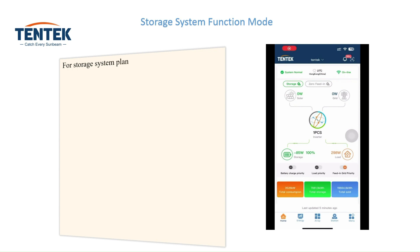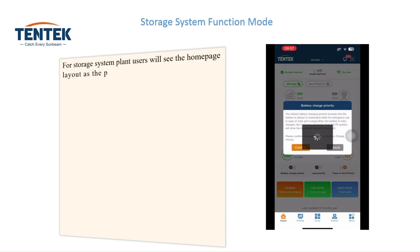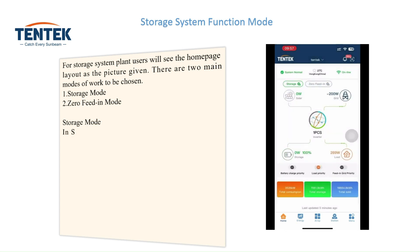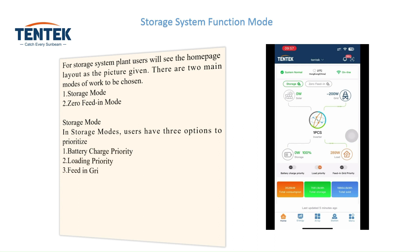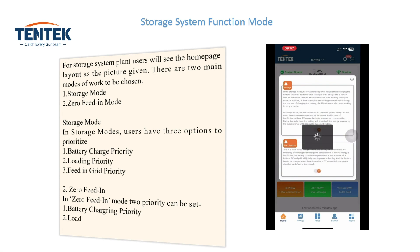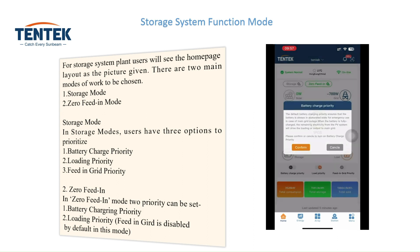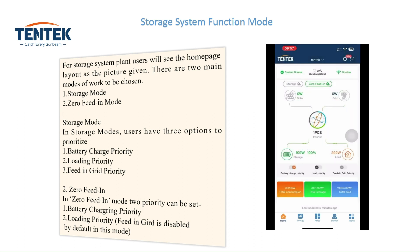For storage system plant users, the homepage layout is shown as pictured. There are two main modes of work to choose from: Storage mode and Zero feed-in mode. In storage mode, users have three options to prioritize: Battery charge priority, Loading priority, and Feed-in grid priority. In Zero feed-in mode, two priorities can be set: Battery charging priority and Loading priority. Feed-in grid is disabled by default in this mode.